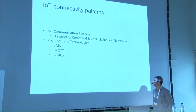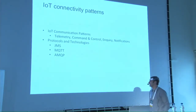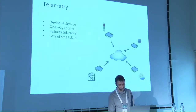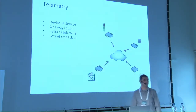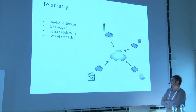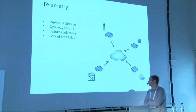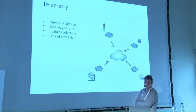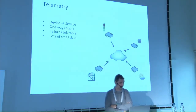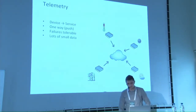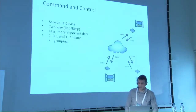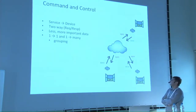Let's talk about the communication patterns typically used in IoT. First, there's the telemetry pattern — one-way communication from the device to the service. For example, a temperature sensor sending its data on a regular basis to the cloud or backend. What's important about this kind of communication is that there's a lot of small telemetry data, and it's not critical that we never lose a message because individual data points are usually not that important.